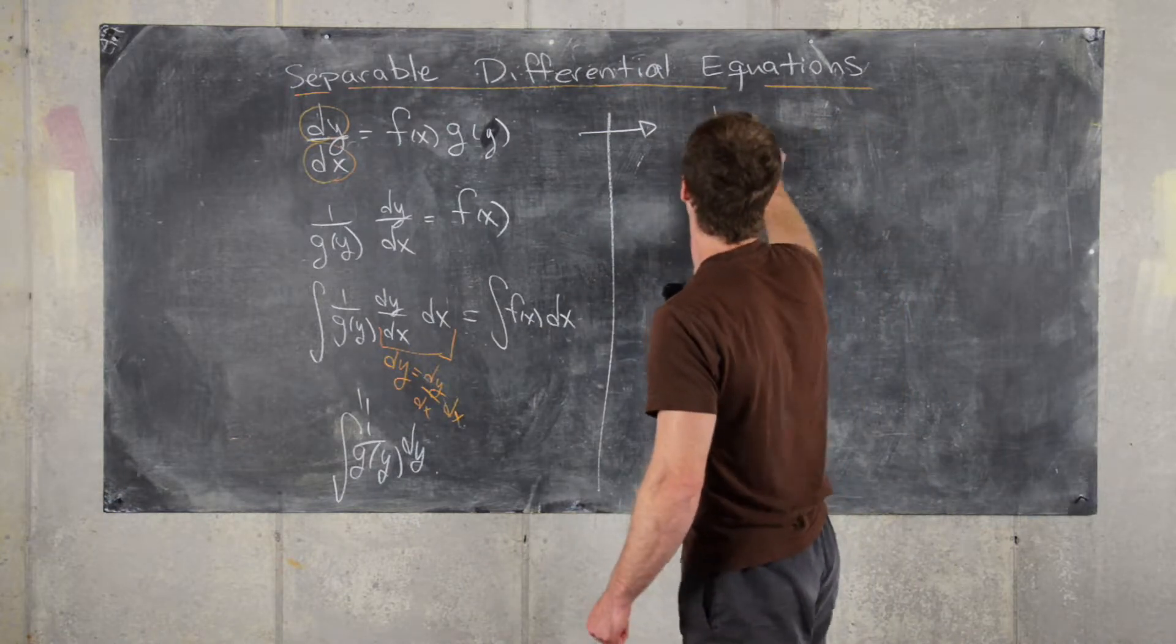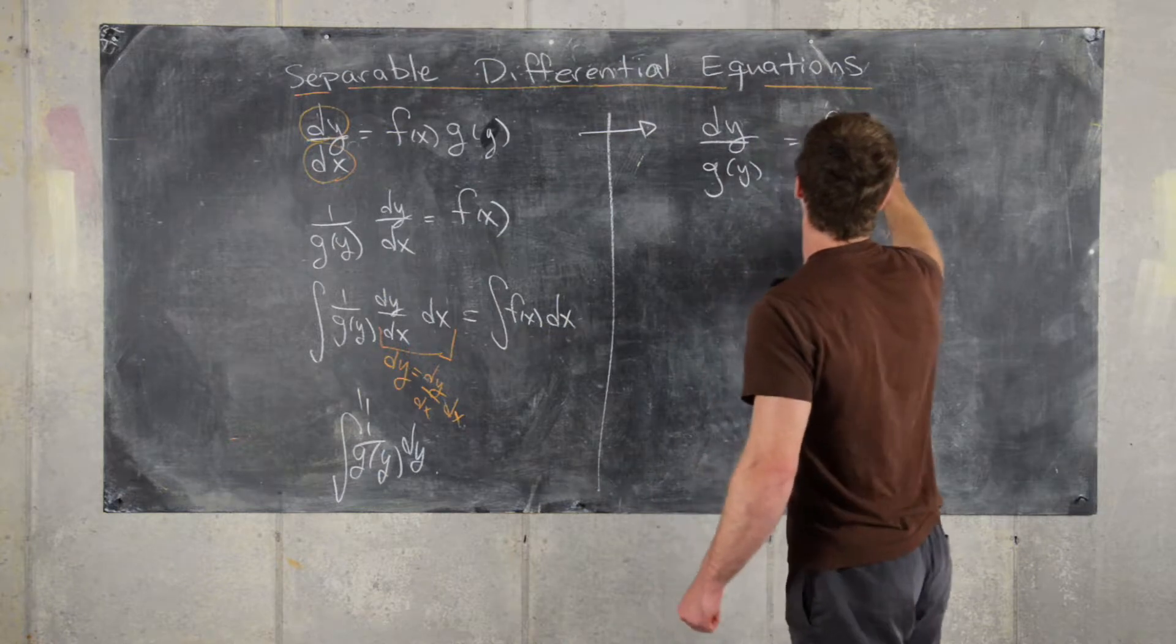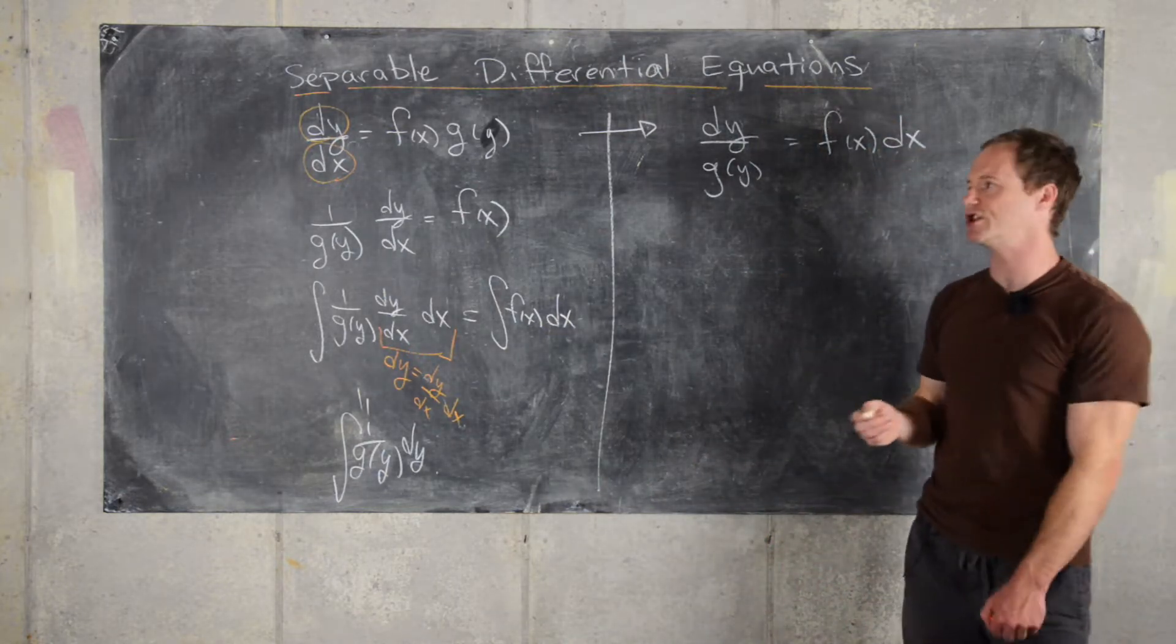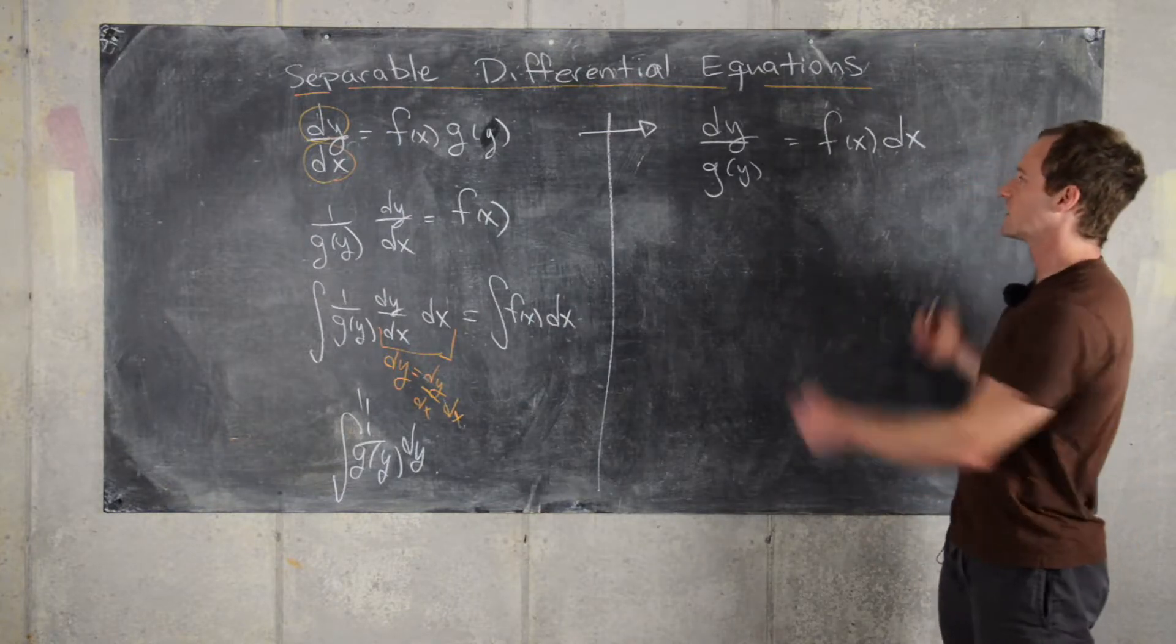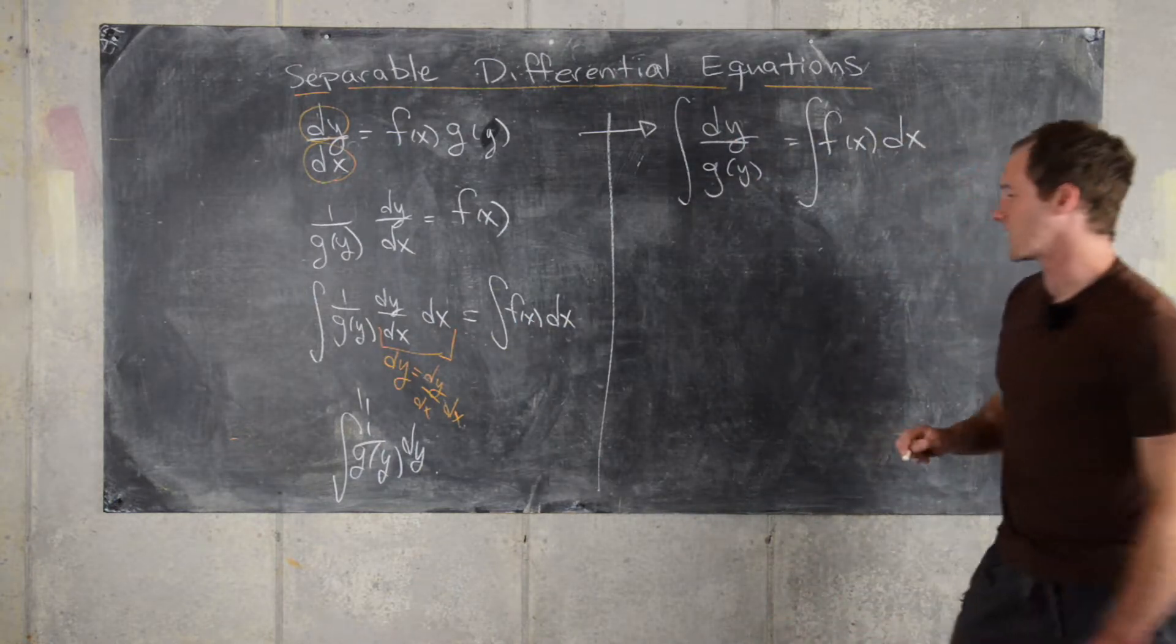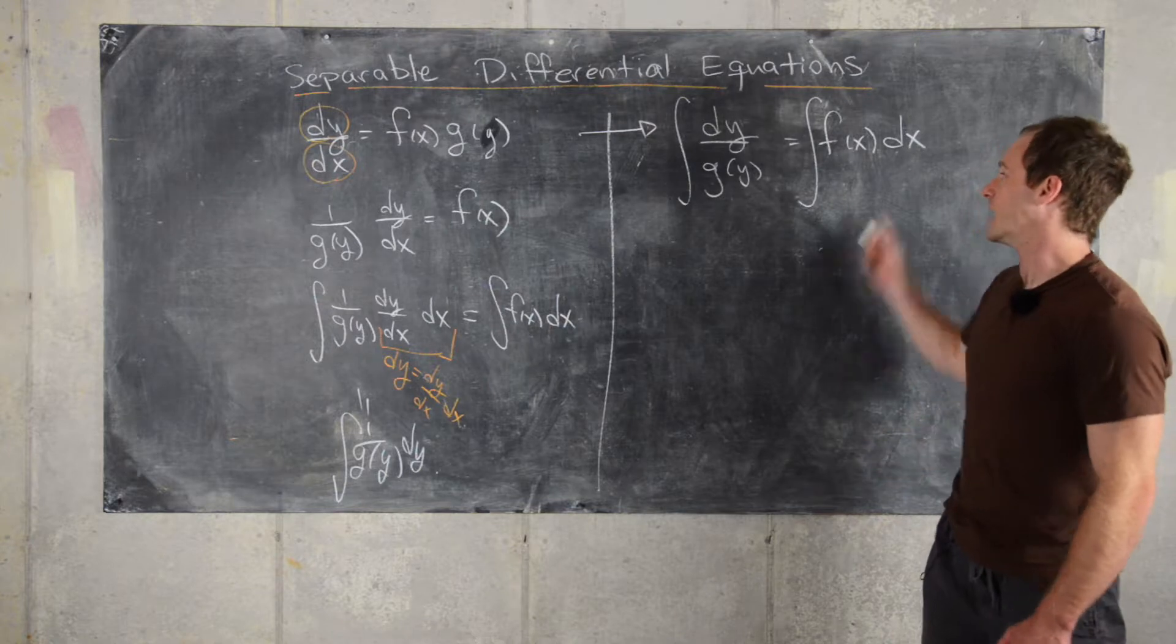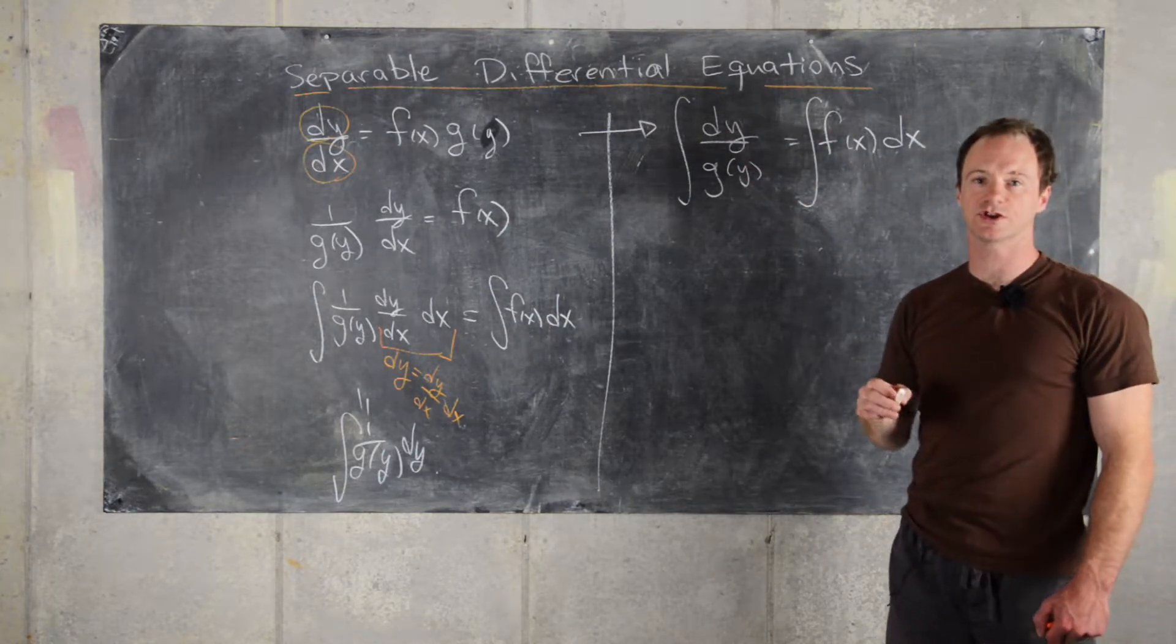That would give us dy/g(y) = f(x)dx. It's a bit sketchy to break up the derivative this way, but it will get us to the right spot. Now if we take the antiderivative of both sides, we'll end up with the same kind of thing that we got over there. This is just a bit faster but will give us the correct solution.